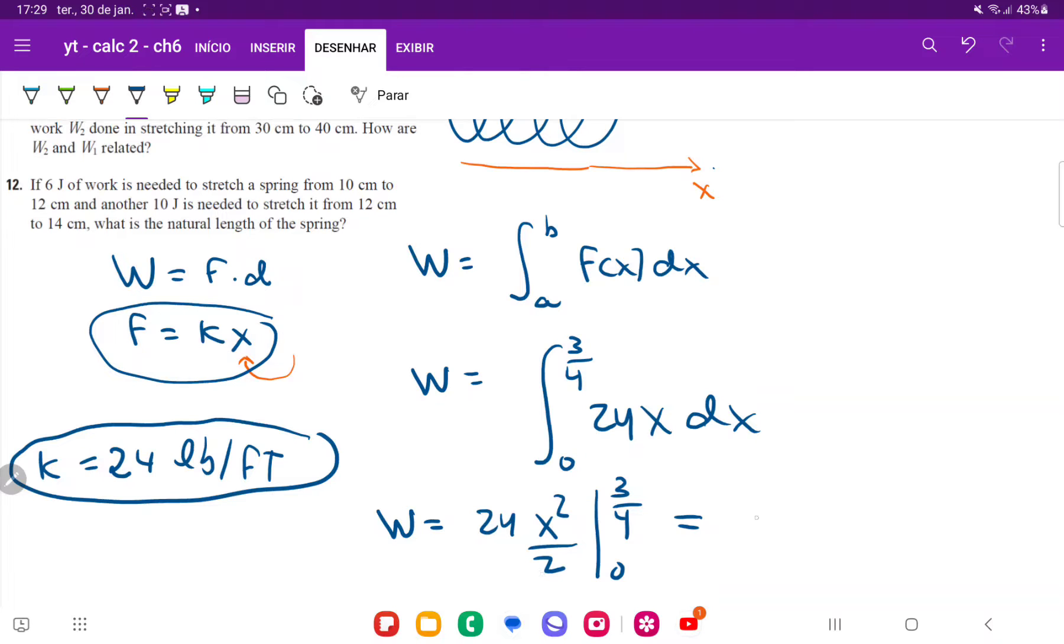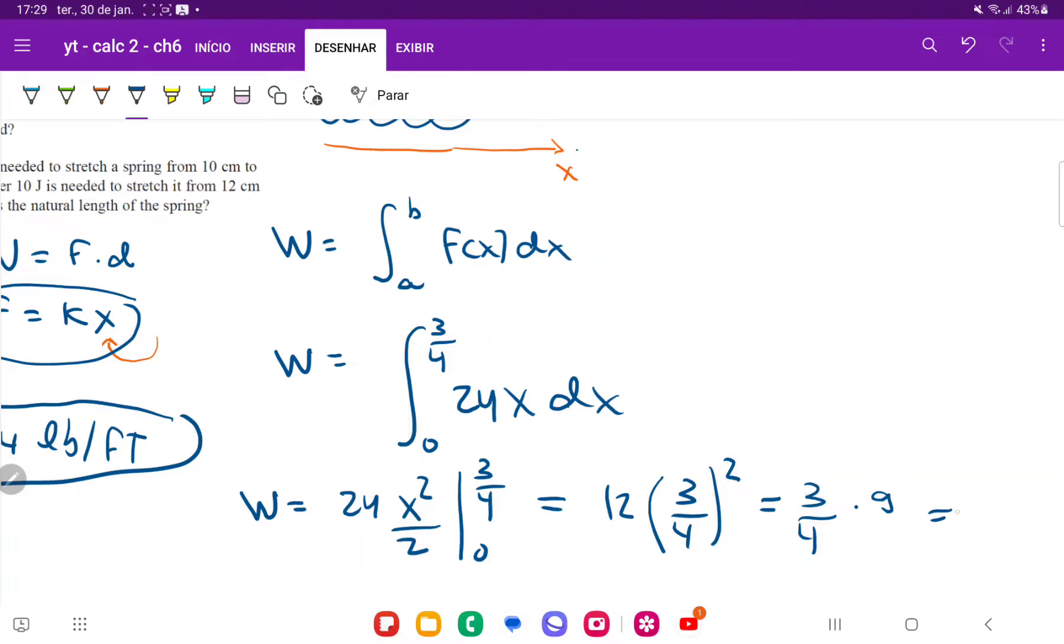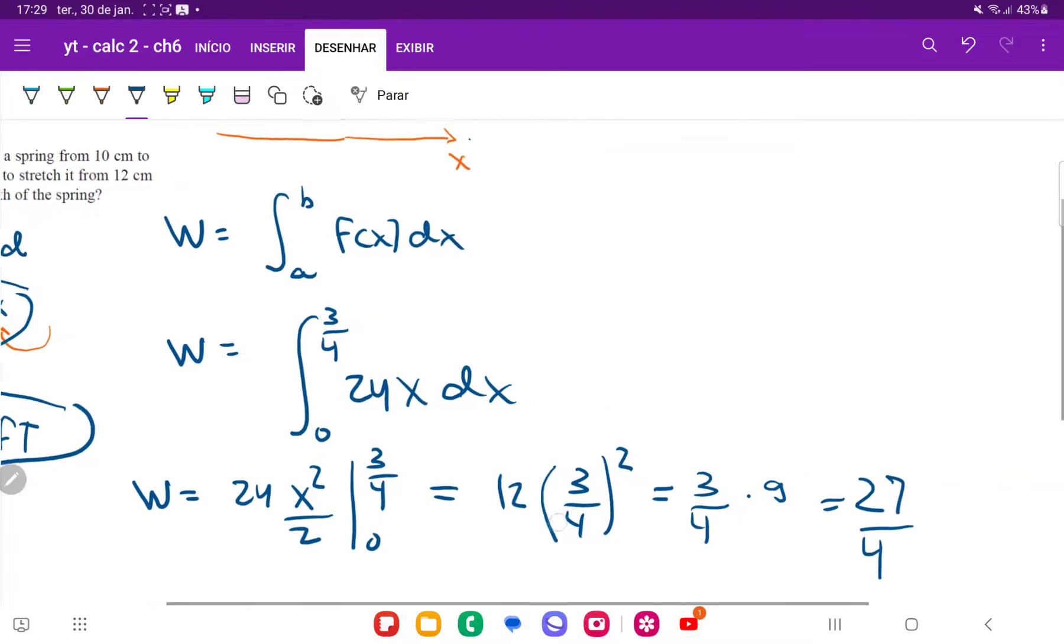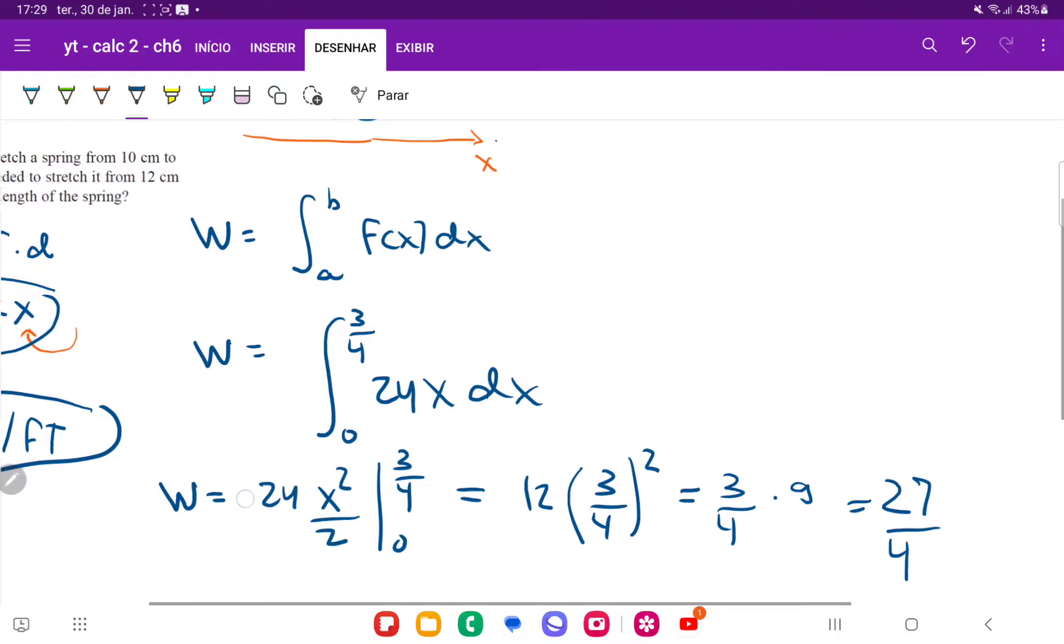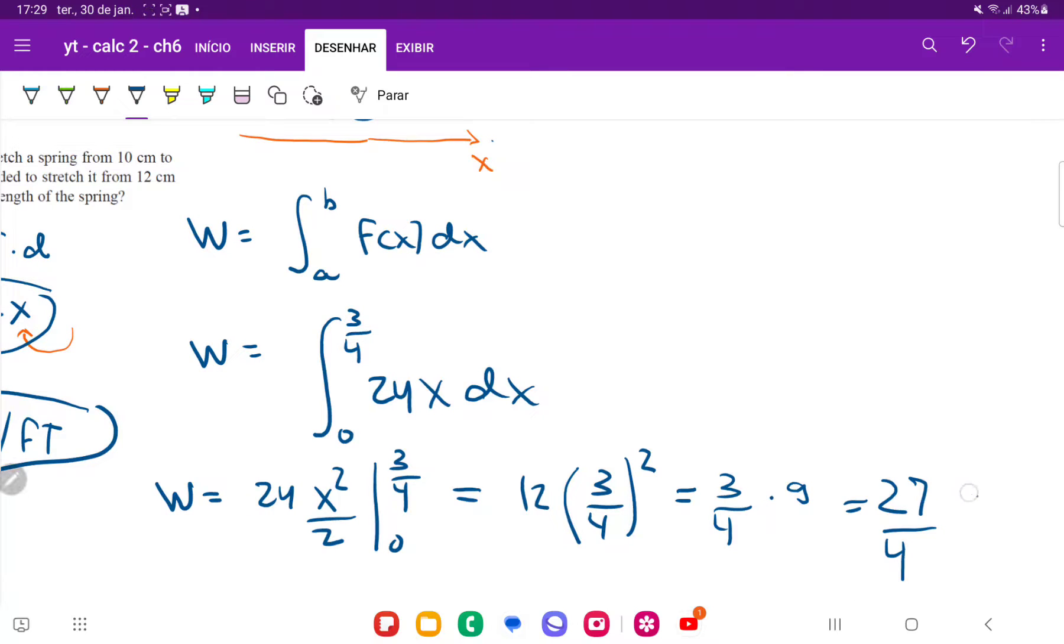So that's going to be 24 divided by two is 12 times three fourths squared minus zero squared. So we're not going to count that. So that's going to be, let's see, 12 divided by 16, that's going to be three fourths times nine squared. So sorry, three squared, which is nine. And the total answer is therefore going to be three times nine is 27 divided by four. And our work here is measured in feet times pounds.